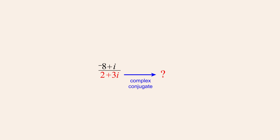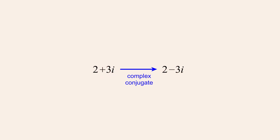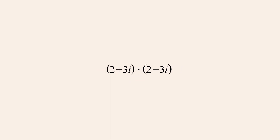This can be accomplished by creating the complex conjugate of the denominator. A complex conjugate is easy to create since it is done by simply changing the sign of its imaginary term. So the complex conjugate of the denominator two plus three i is two minus three i. Now an important property of complex conjugates is that when a complex number is multiplied by its complex conjugate, the product will always be a real number.